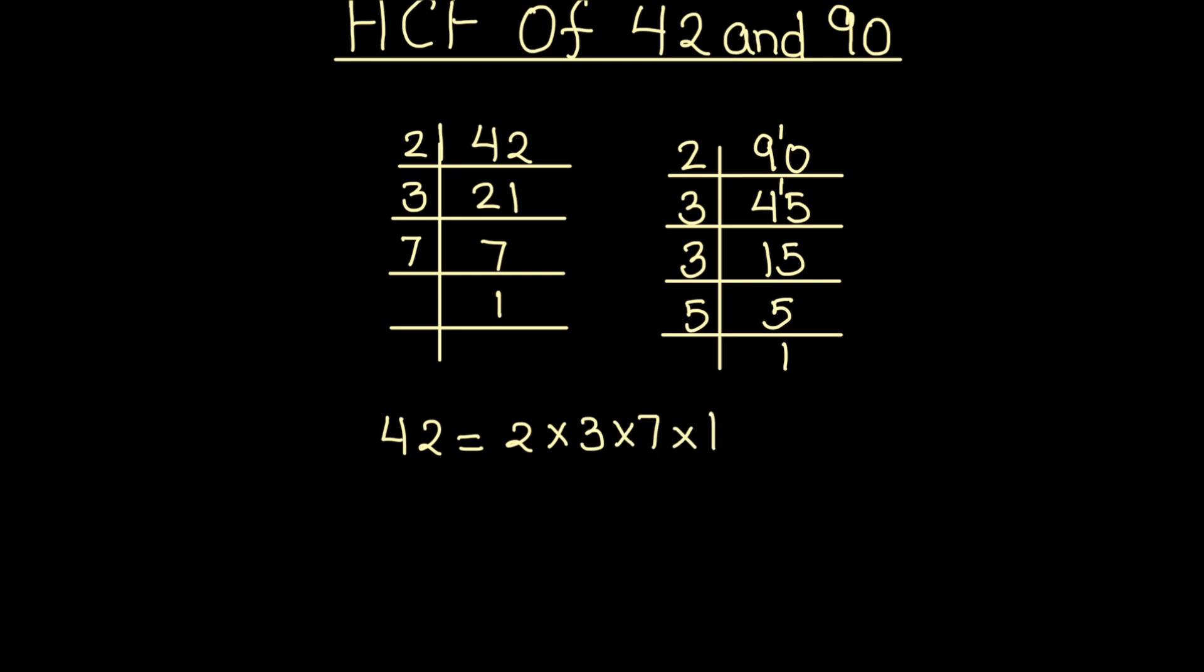And 90 is 2 times 3 times 3 times 5 times 1. Now we need to find the common factors between the two numbers.